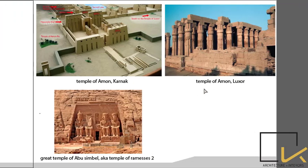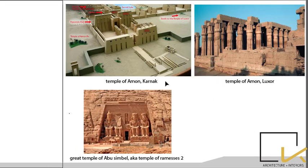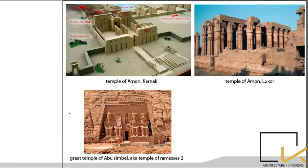Three famous Egyptian temples are: the Temple of Amun at Karnak, which features a pylon, hypostyle hall, and sacred lake; the Temple of Amun at Luxor; and the Great Temple of Abu Simbel, also known as the Temple of Ramesses II, featuring four statues of King Ramesses each 20 meters tall.